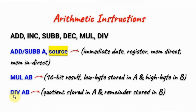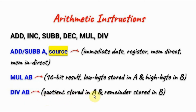Next we have the division instruction, and the operand again must be AB. This means that the byte in register A is divided by the byte in register B. The quotient result is stored in the accumulator, while the remainder is stored in register B.